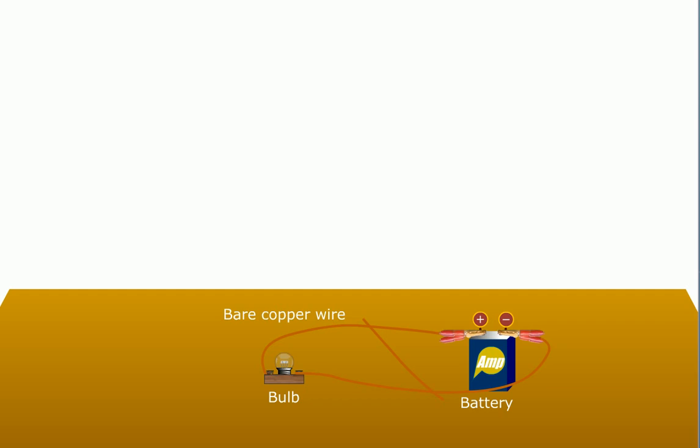This is because when the third piece of wire was placed across the two wires leading to and from the bulb, the wire created a short circuit.